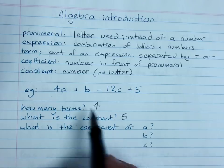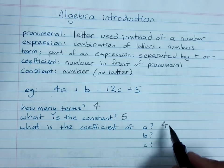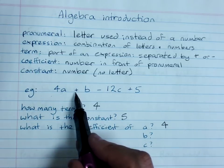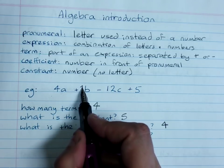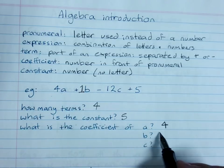What is the coefficient of a? That's 4. The coefficient of b. Now, this is tricky. There's no number in front of b, but you'll remember, if there's no number in front, then the coefficient is 1.